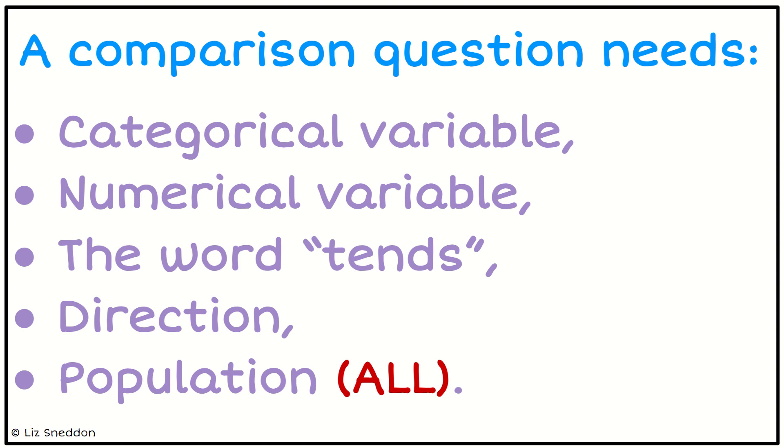We also need the direction, so this is looking at which of the groups you think might be bigger or smaller, taller or shorter, heavier or lighter - all of those different things. And then we need our population, and we often use the word 'all' to help us identify it's all the population, is all of this group of people or group of objects.